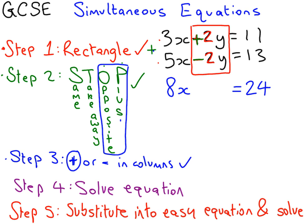Step 4 says, whatever you get here from step 3, we've got 8x equals 24, we have to solve the equation. Now hopefully you know how to solve equations. If you've got 8x equals 24, you're going to divide by 8 on both sides and get that x equals 3. You can put a little square around that because that's one of your answers. And that's step 4 done.